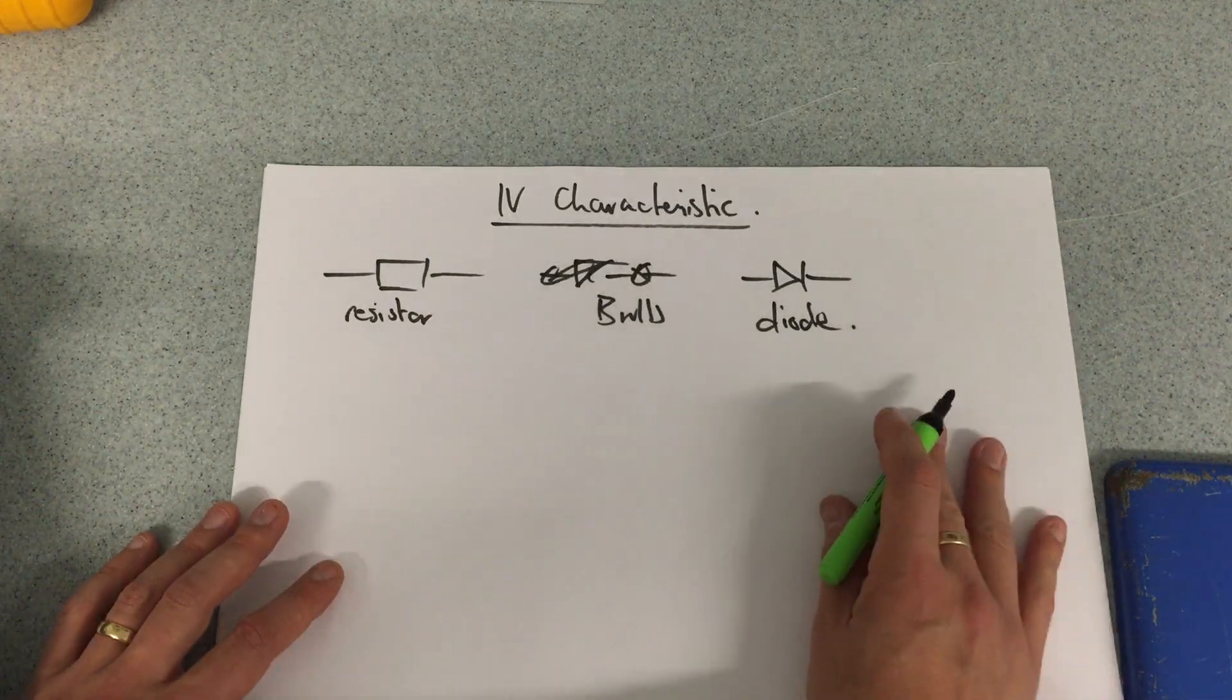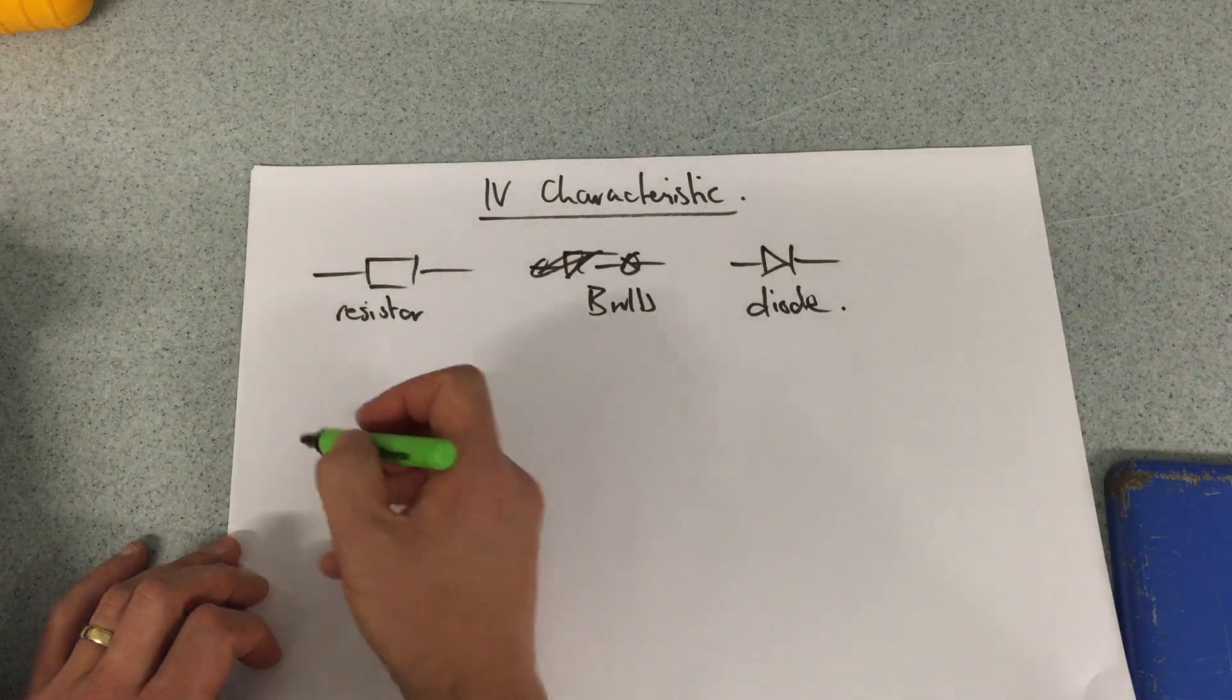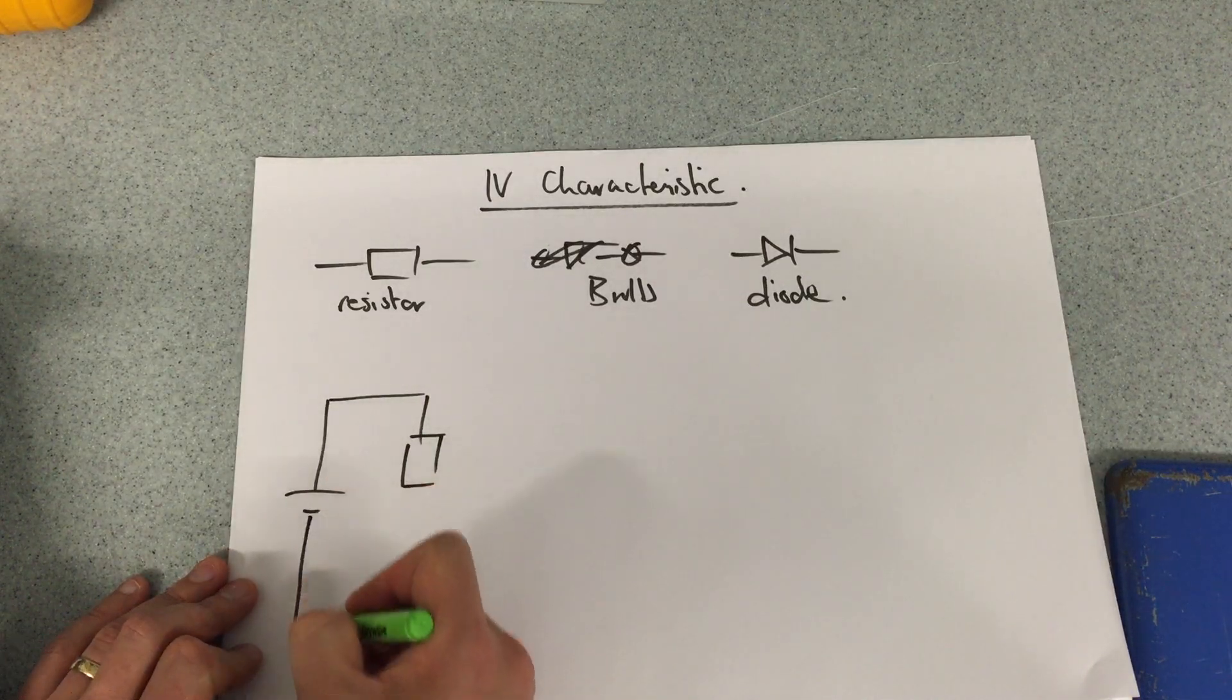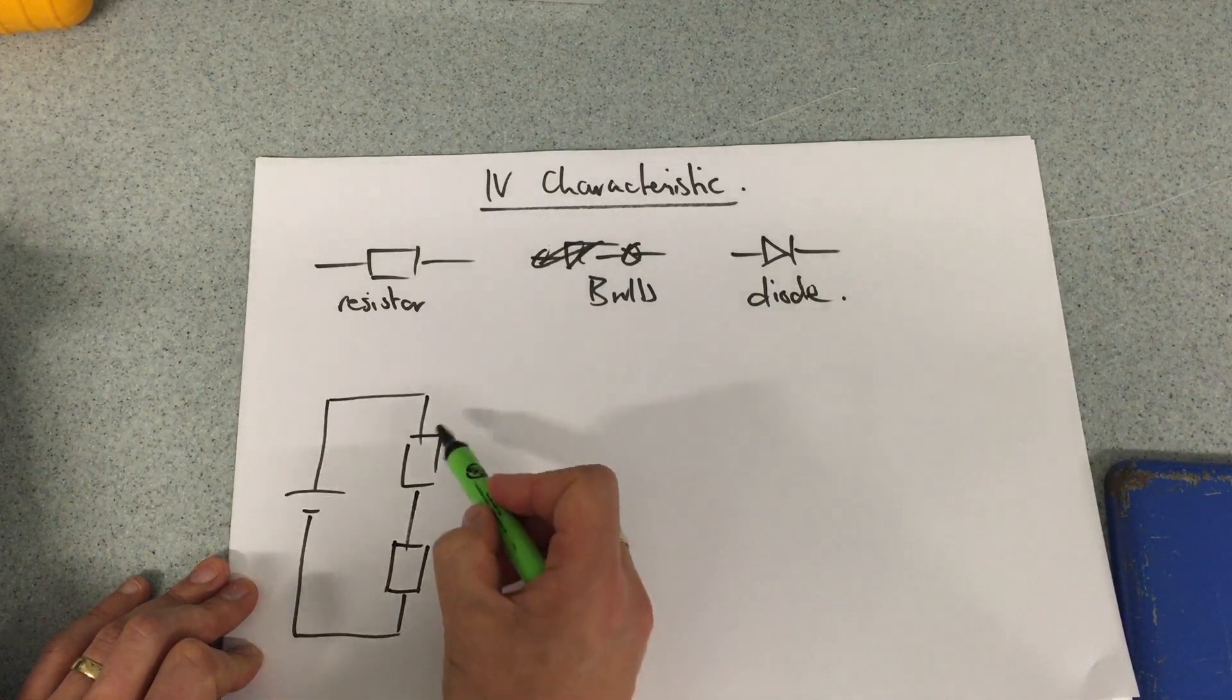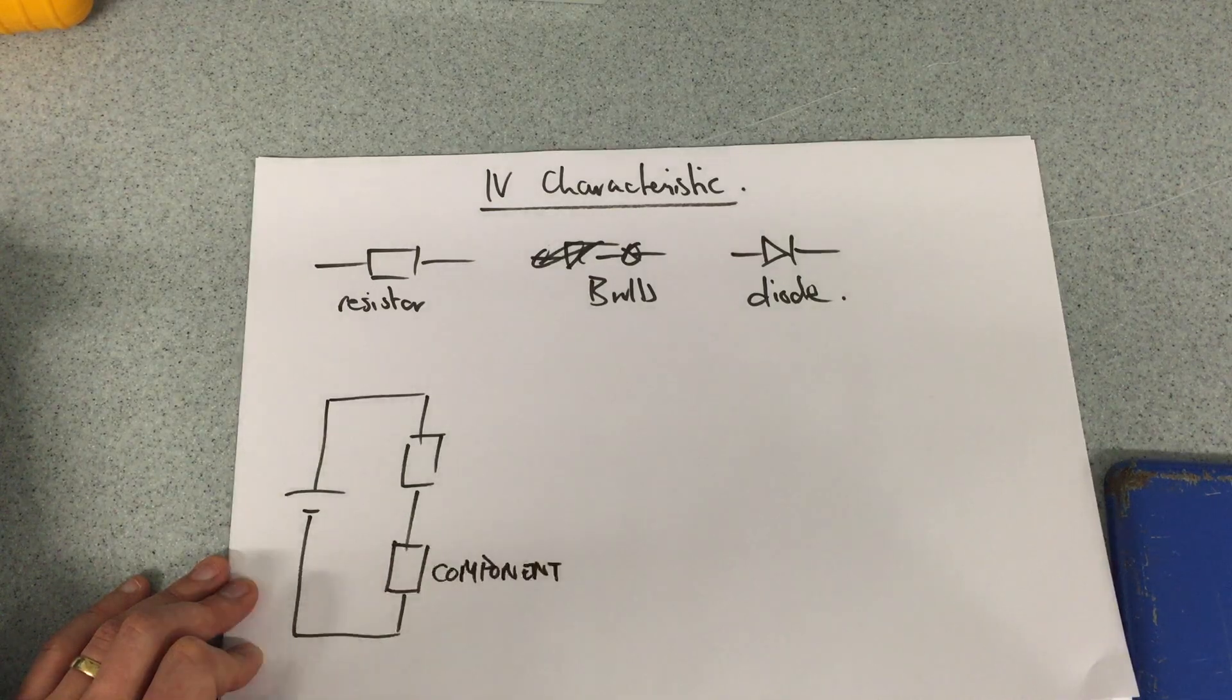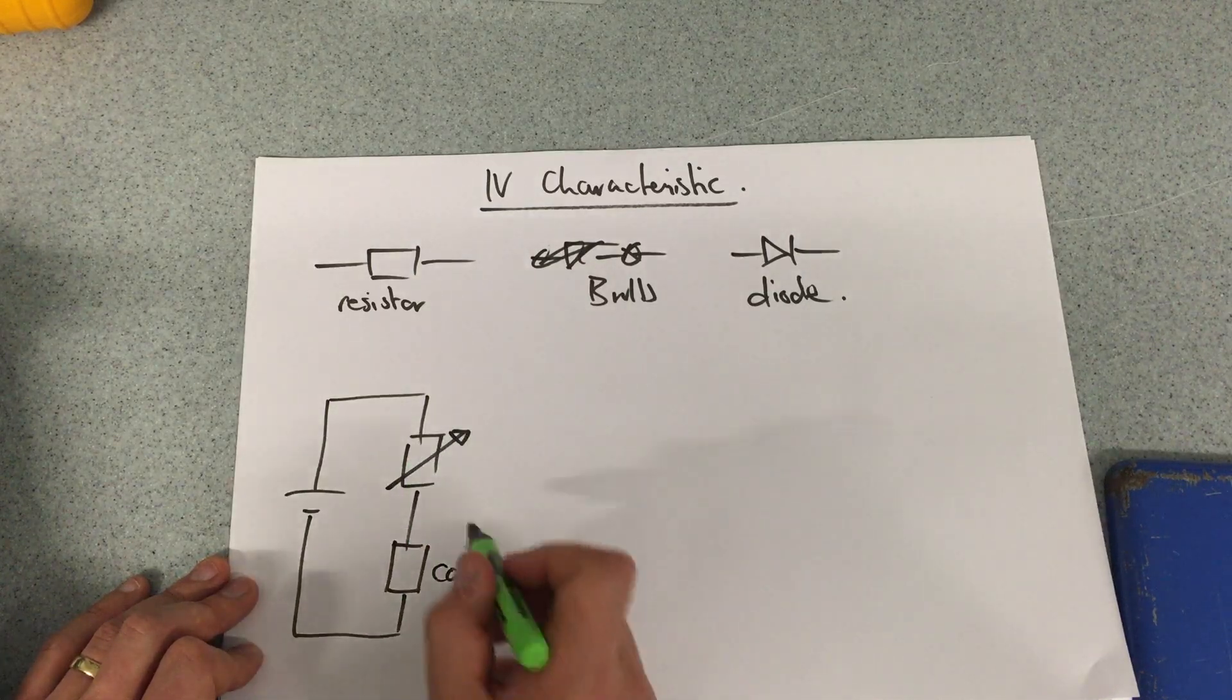So how are we going to look at how the voltage and current vary? We're going to have to find a way of changing the voltage and the current to look at how it behaves at different values. So we're looking for a cell or a battery, our component in series with another resistor, ideally a variable resistor. A variable resistor can change its resistance from high to low. This is also known as a potential divider.